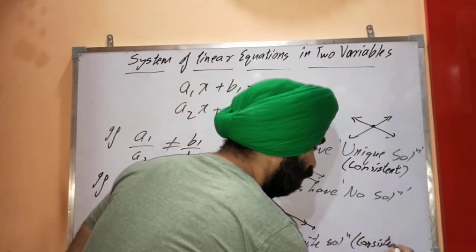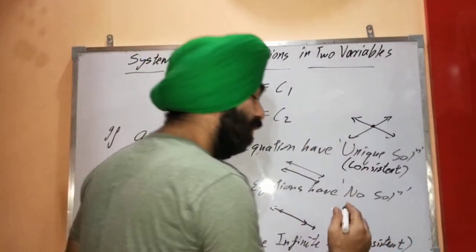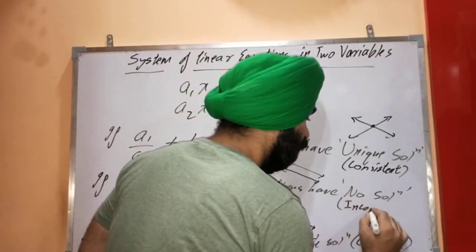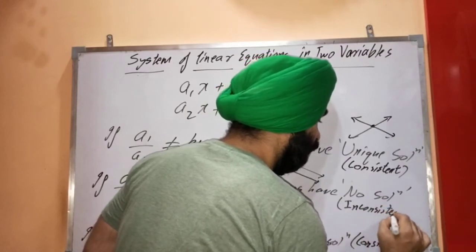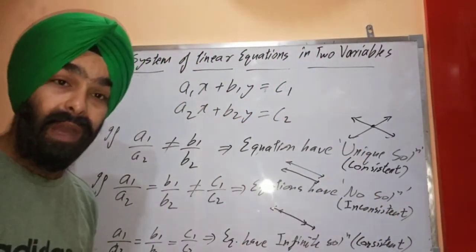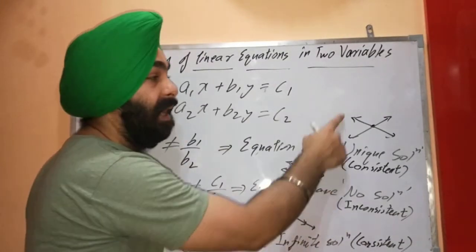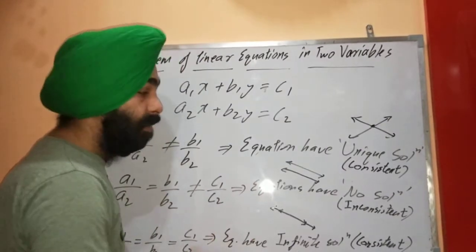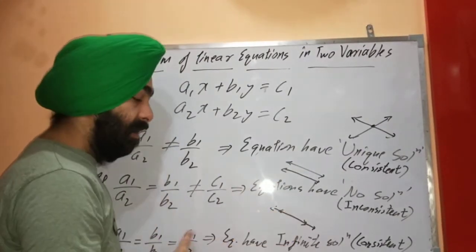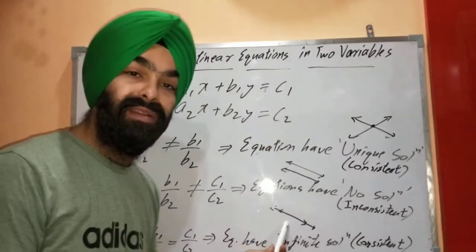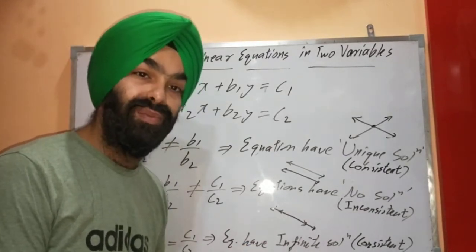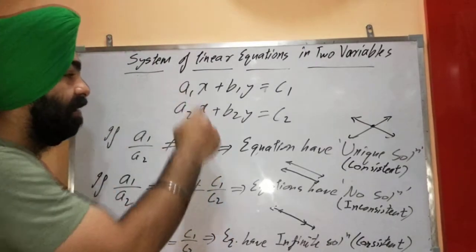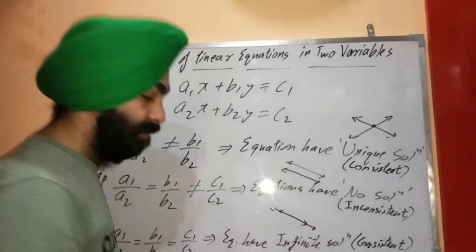The case of unique solution or infinite solutions can also be called consistent; no solution, since we do not have any solution, is called inconsistent. The nature of the graph: in the unique solution case there will be intersecting lines; in the case of no solution there will be parallel lines; and in the case of infinite solutions there will be coincident lines. So by just checking these ratios we can tell what type of solution we will get.